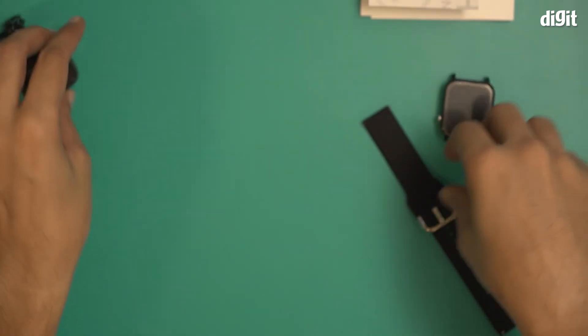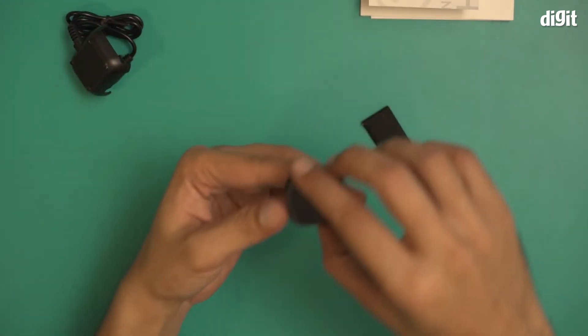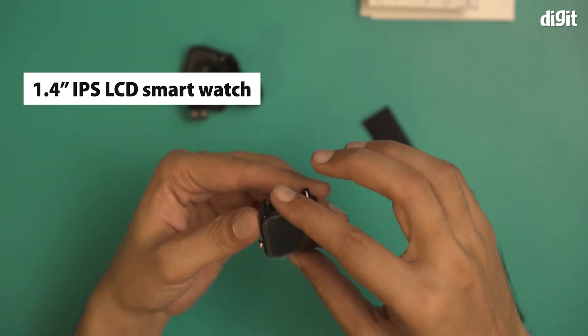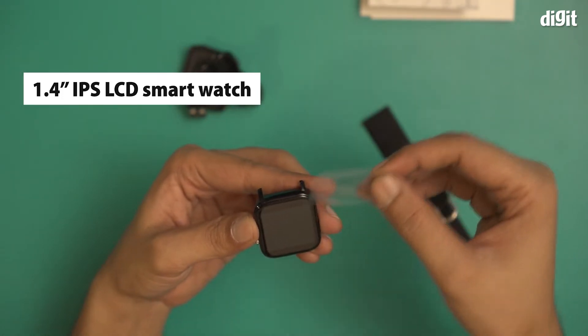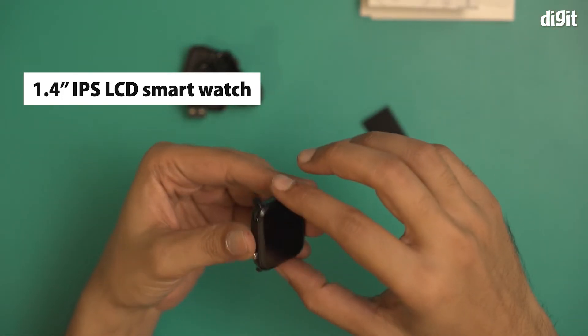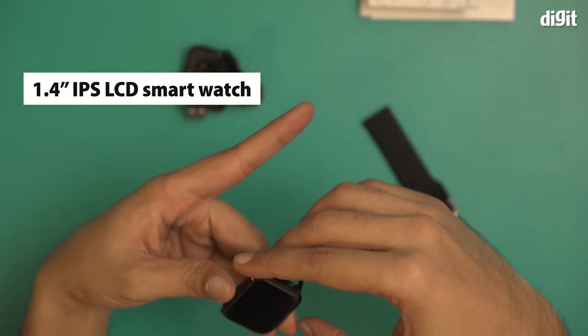Now let's take a look at the smartwatch itself. So this is the TAGG Verve smartwatch. I'm going to remove this protective layer right over here and I'm going to power it on.